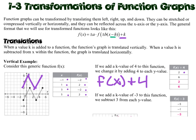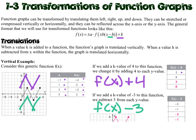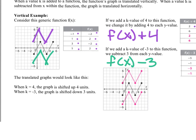If we were to make it f of x minus 3, we would be going down 3. We would subtract 3 from every y value. And here's a table of that. The graph shifts up 4 when k is 4. The graph shifts down 3 when k is 3.